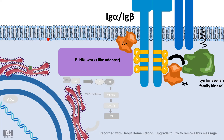Another arm of the signaling is triggered by Syk kinase. Syk can directly activate phospholipase C gamma, which can cleave PIP2 to give rise to IP3 and DAG. IP3 then binds to IP3 receptors in the endoplasmic reticulum, allowing calcium to be released into the cytoplasm.